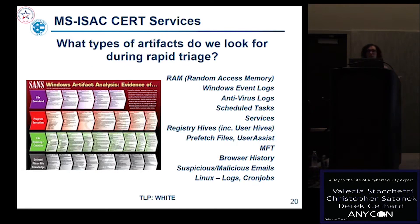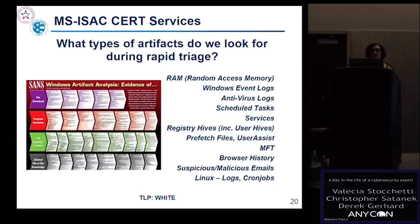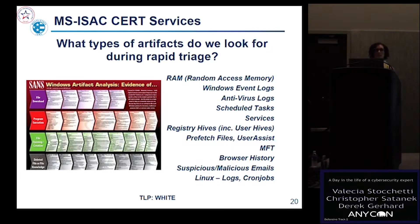I recommend the Windows forensic artifacts poster even if you're not in a forensics environment. It's a chart of artifacts on the Windows operating system showing where you can look for different types of evidence. For example, to find evidence of process execution, you'd look at prefetch files, shim cache, user assist, and the user's registry. The registry is one of my favorites — you can find a lot there. I've solved multiple cases just by looking at registry files.